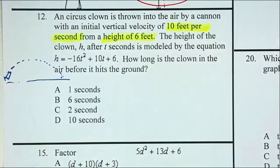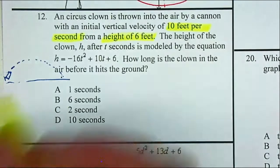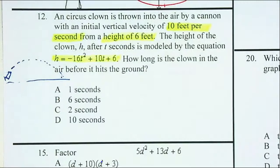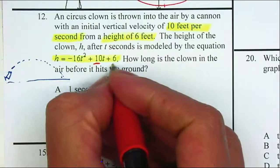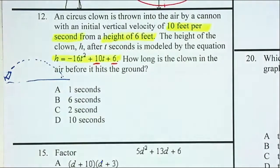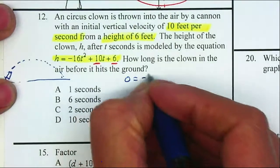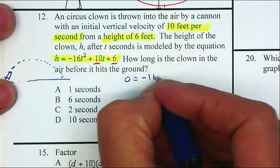What's great about this is that they already set up the equation for you. They already plugged in the 10 for the velocity and the 6 for the initial height. So the only thing that we need to do is solve it. We want to find out where it reaches the ground, so your h will be 0. 0 is equal to -16x² + 10x + 6.